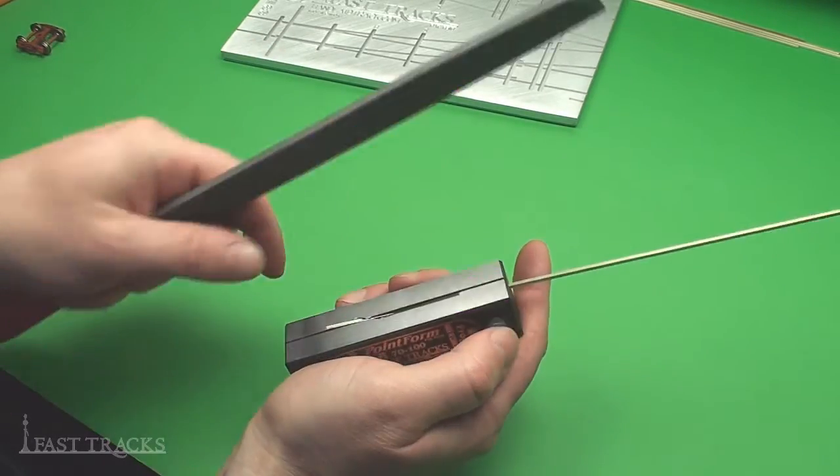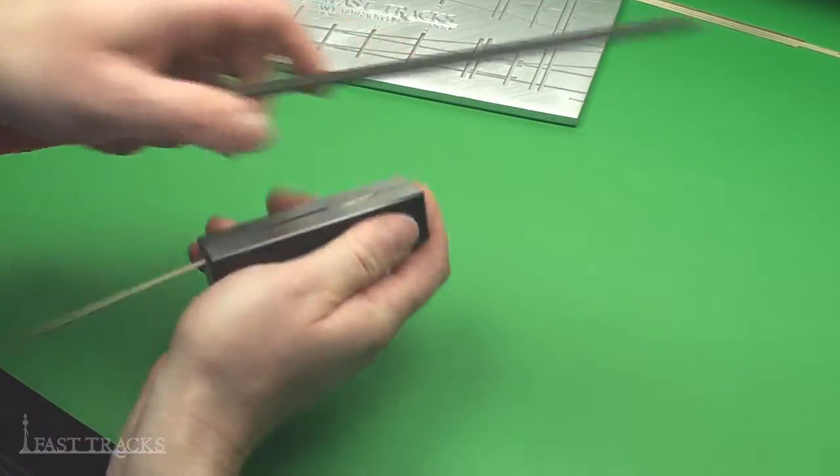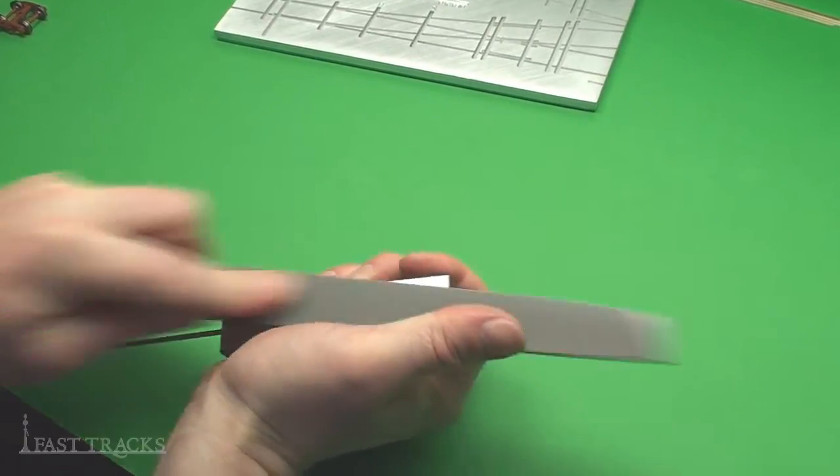If you file this way, the file has a tendency to want to catch the edge of the rail and it'll want to curl it up. So it's best to do the filing this way. So I'm going along the full length of the face of the tool.